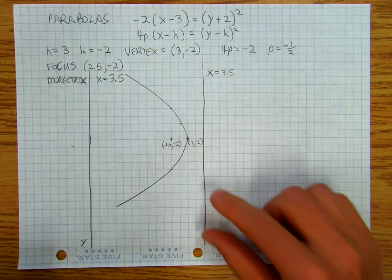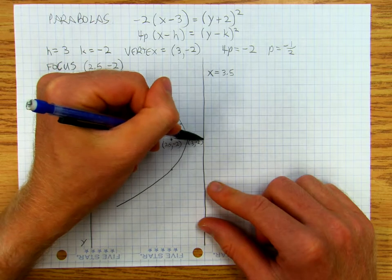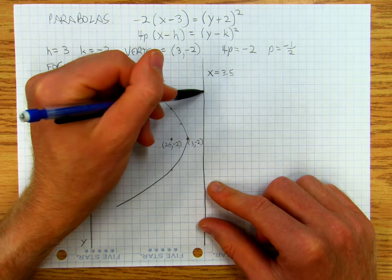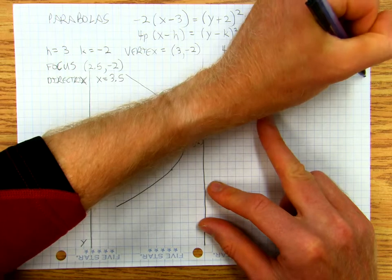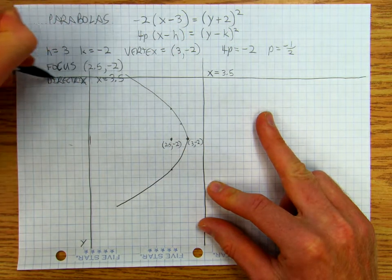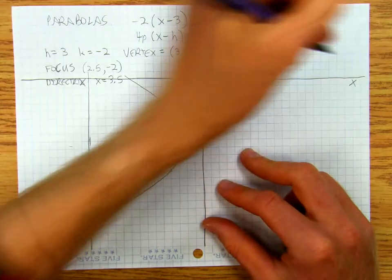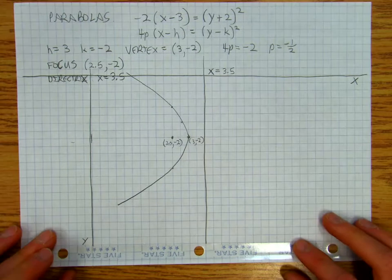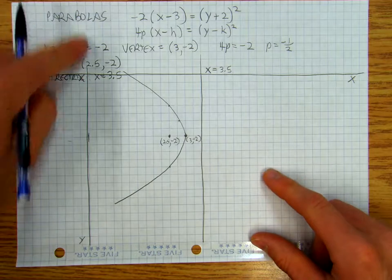And then, my x-axis, that's negative 2, counting across. So there's my x-axis and my y-axis.